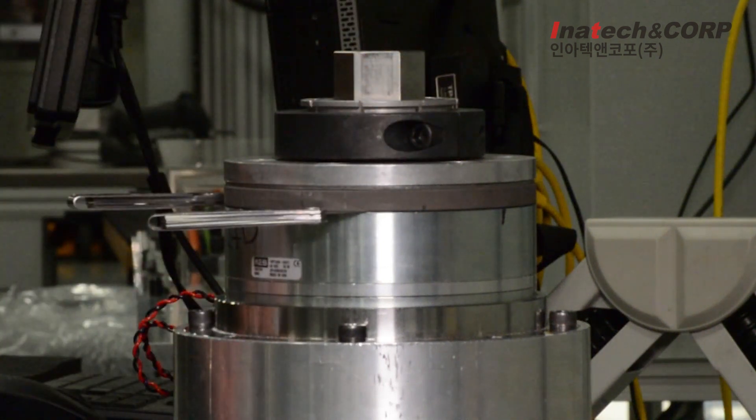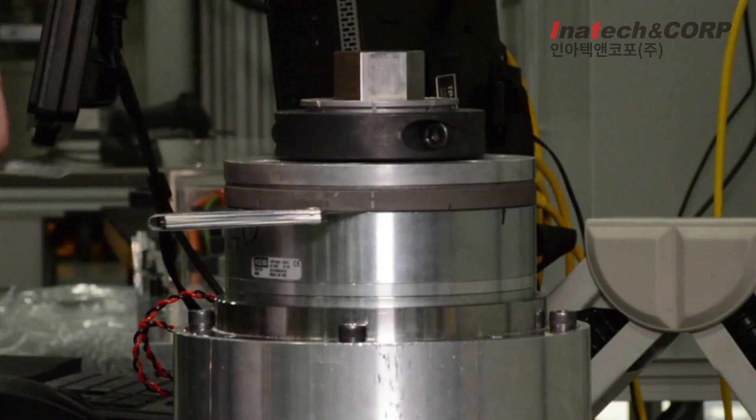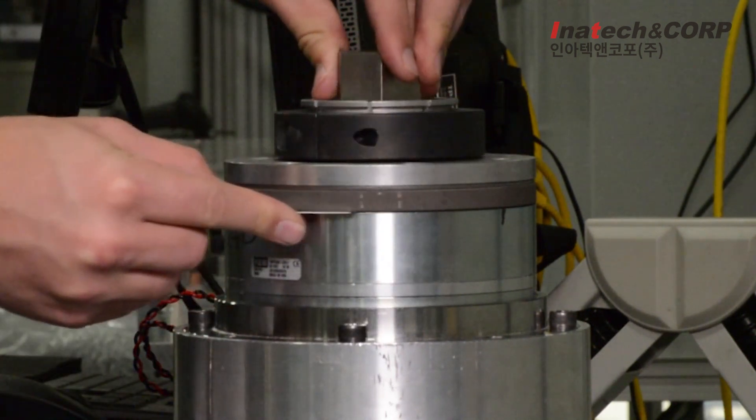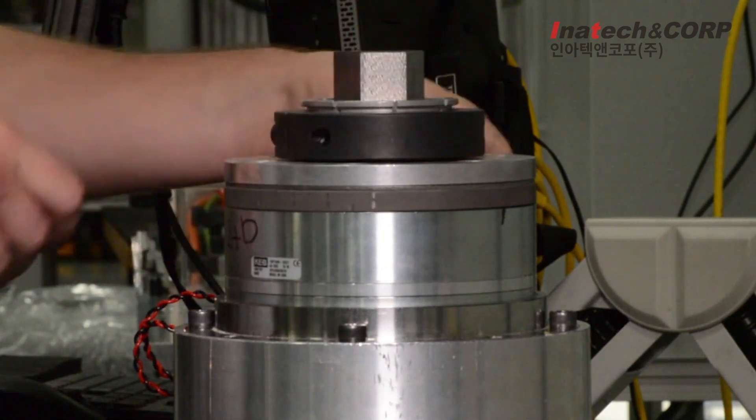When the hub armature is secure, double check the air gap to ensure it is consistent around the entire circumference of the brake. Adjust if needed.